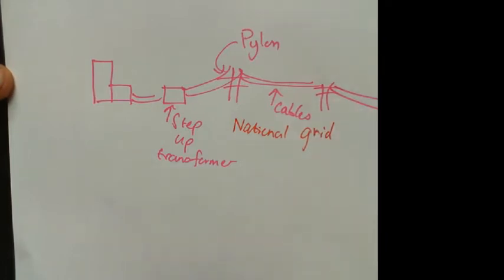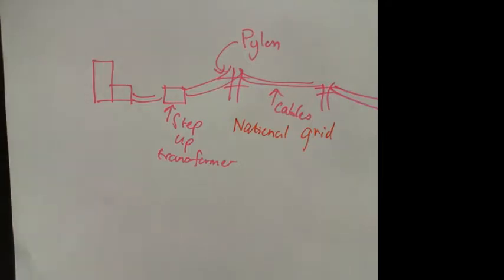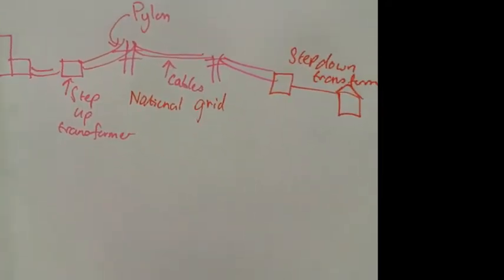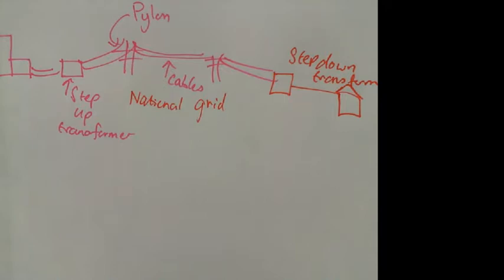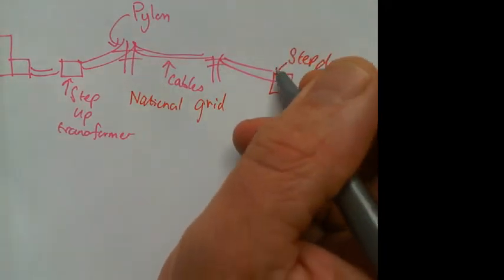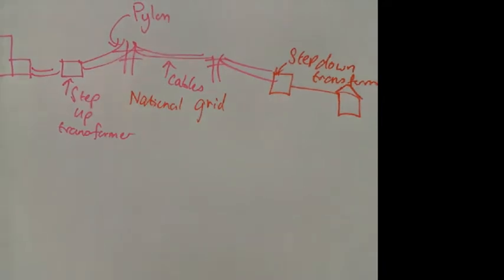And then when it goes into your house, it goes into something called a step down transformer. And then it goes into your house. But the question is, what's going on? Pylon cables, national grid, step up, step down. But what do I mean by step up, step down? What is being stepped up, what is being stepped down?